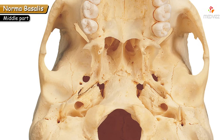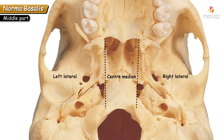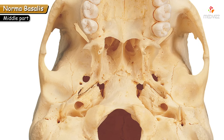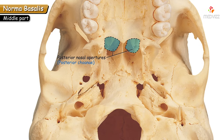To learn the features of the middle part of norma basalis, we divide it into a center median area and right and left lateral areas on each side. In the center median area anteriorly, we can see two openings called the posterior nasal apertures — the openings of the nasal cavity from the posterior side, also termed the posterior choanae.